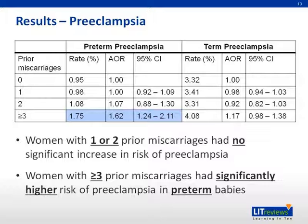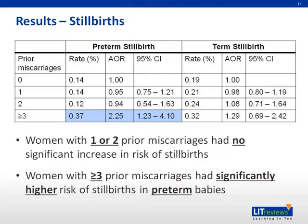Onto the results. For preeclampsia, the authors found that women with one or two prior miscarriages had no significant increase in the risk of preeclampsia. However, women with three or more prior miscarriages had significantly higher risk of preeclampsia in preterm babies, as seen in the table above. For stillbirths, women with one or two prior miscarriages had no significant increase in risk, but women with three or more had significantly higher risk of stillbirth in preterm babies.